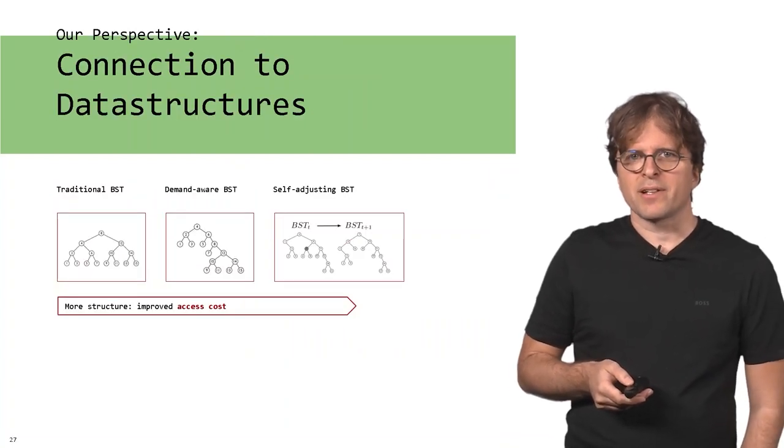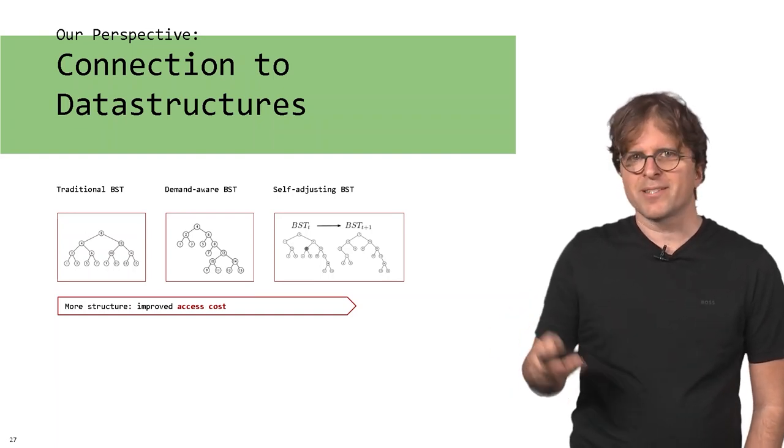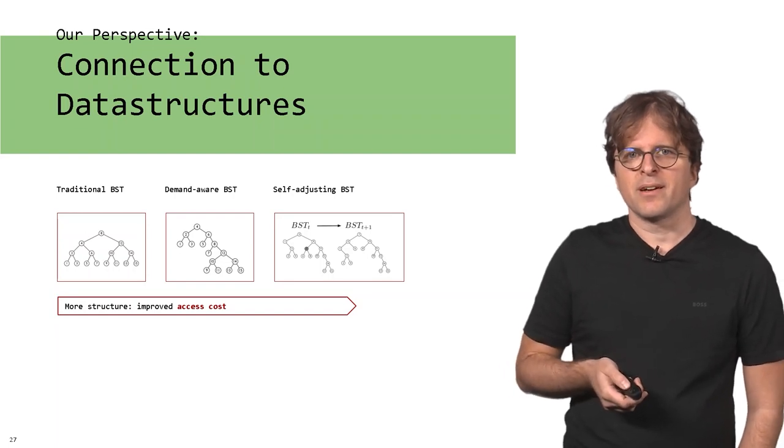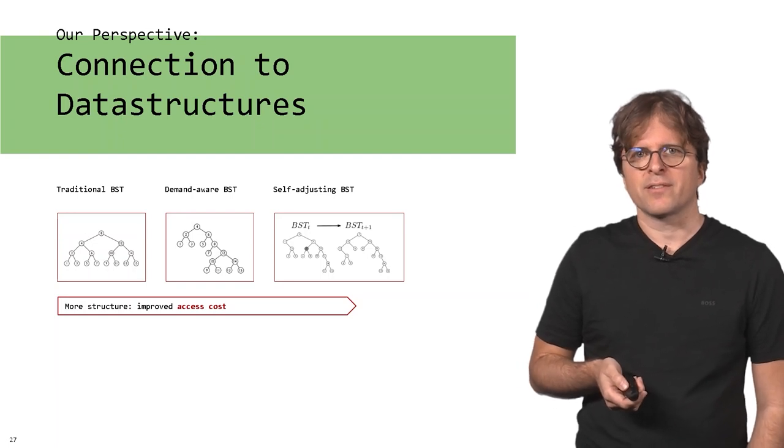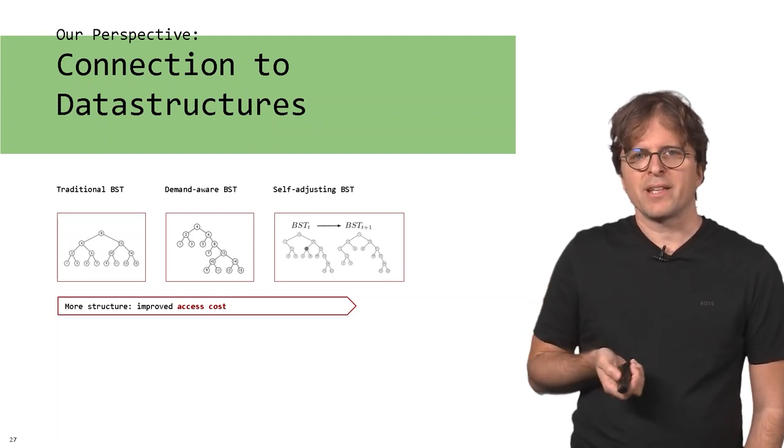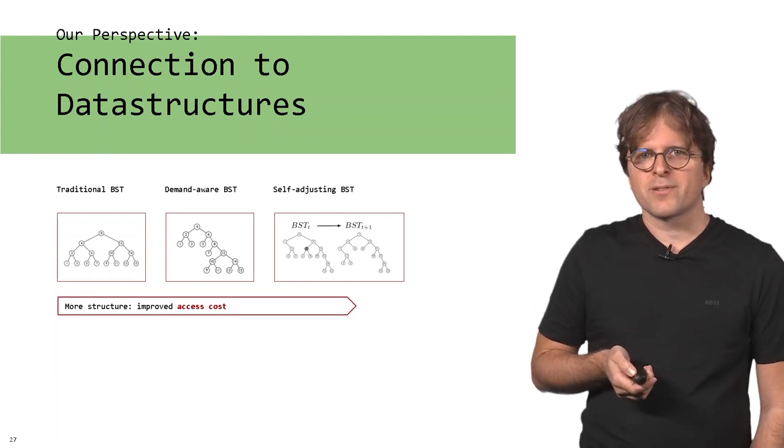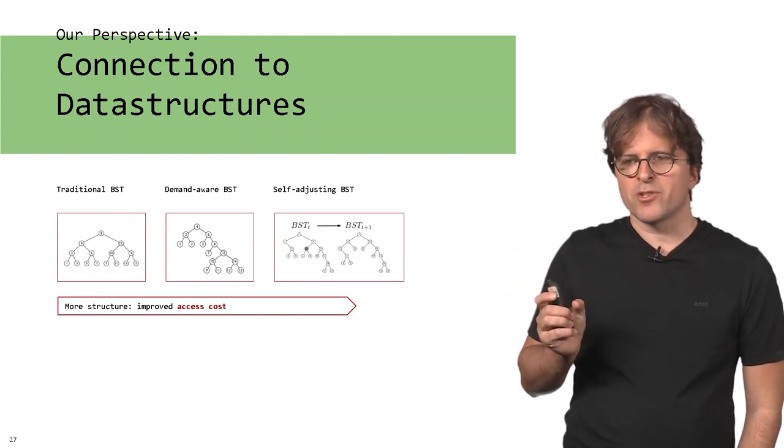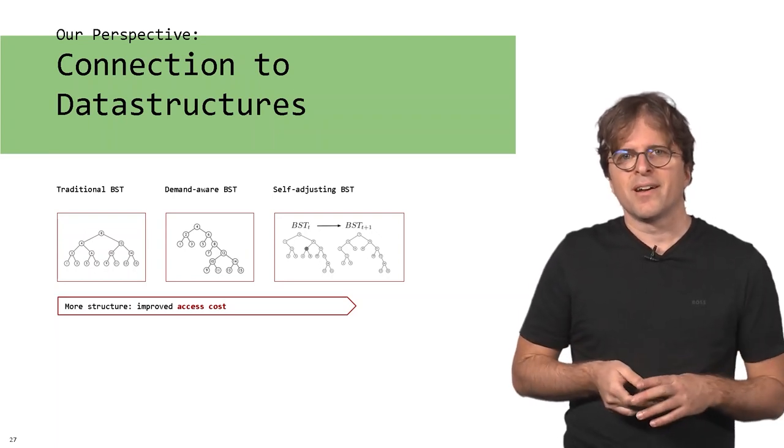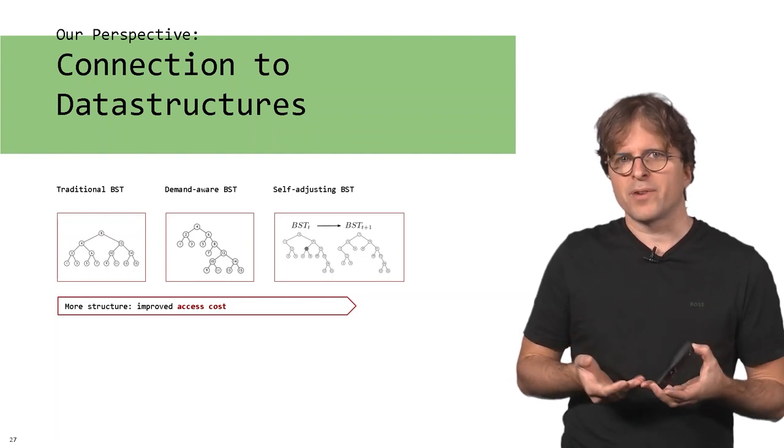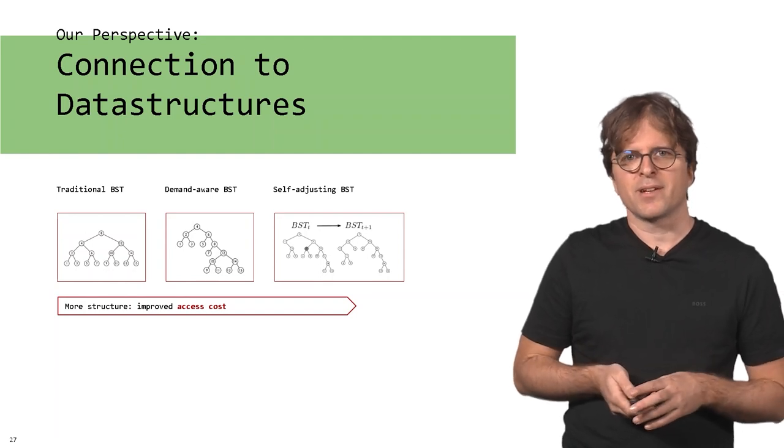One interesting perspective we'll explore further in this course is how this technology relates to other fields. If you compare this to evolving theory in the context of data structures, classically with a binary search tree, the goal was to have a balanced binary search tree, and that was the ideal data structure. But there's also something called the demand-aware binary search tree - binary search trees optimized towards the demand. If you have a frequency distribution of keys and build a demand-aware binary search tree, this can improve the access cost because you can keep very frequent keys close to the root and less frequent keys lower in the tree.